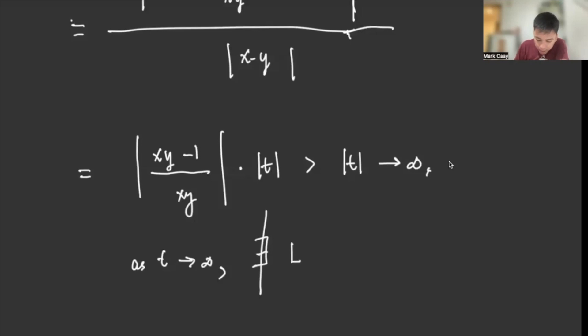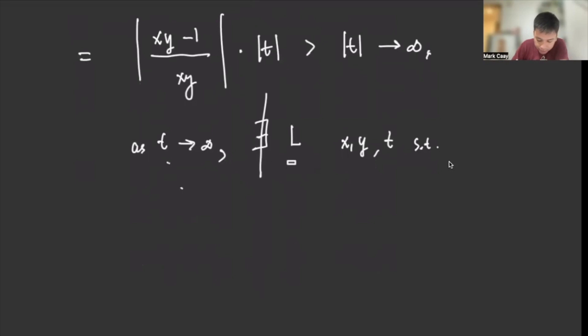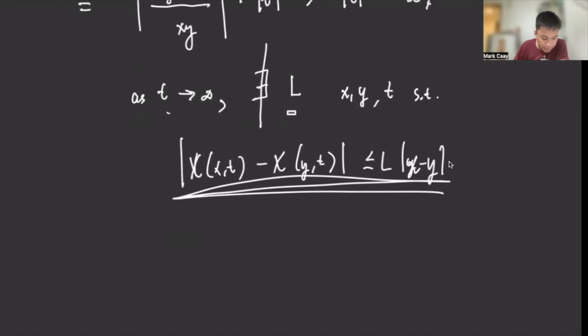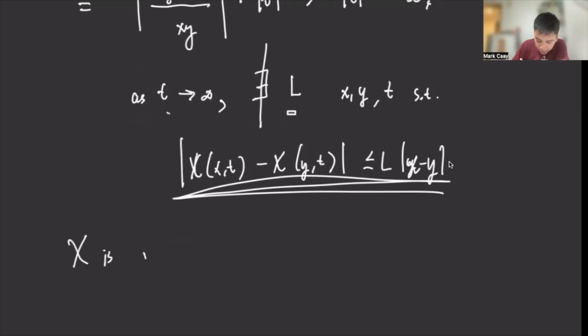Because when it approaches infinity, you cannot find any value of L that is independent of x, y, and T itself such that it satisfies the inequality. So since you cannot satisfy it, ibig sabihin, X is not Lipschitz. Because you cannot find a value of L. That's it.